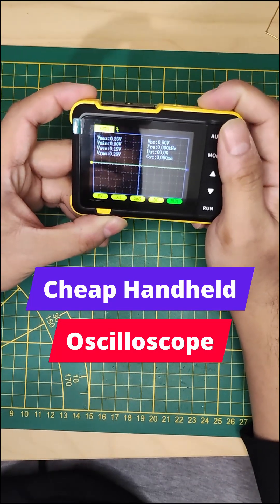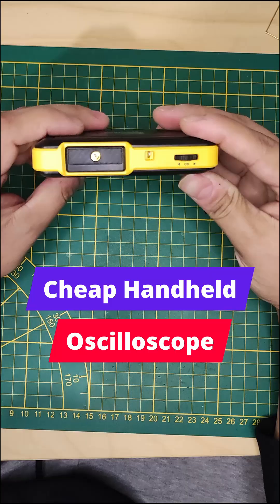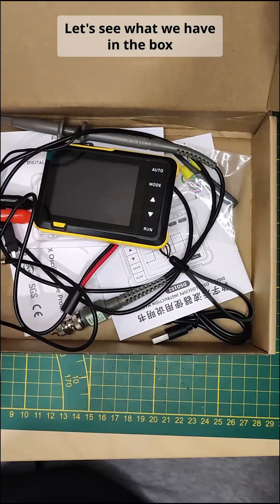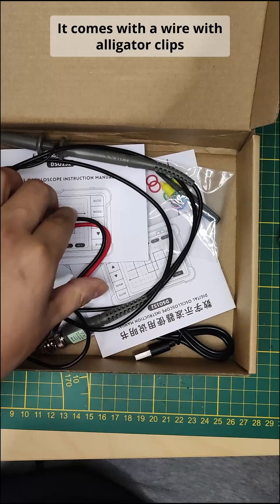This is a cheap $25 oscilloscope which I got from Temu. Let's see what we have in the box.